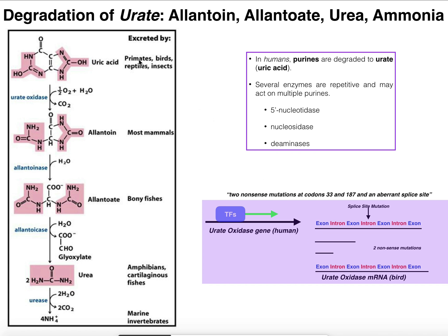So humans — and upper-level primates — excrete their purine degradation products as uric acid. Now, there are some other organisms that also excrete uric acid, such as birds, reptiles, and insects, but they do so not because they have a mutant urate oxidase gene — they just don't have the gene at all. So it's different from the reason we do it: our urate oxidase gene is present but non-functional, whereas these organisms simply lack the gene entirely. But all these organisms, including us, excrete uric acid.